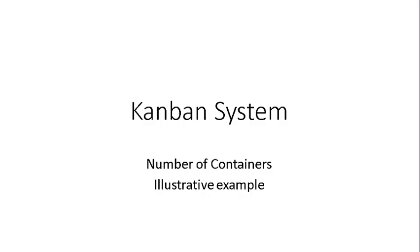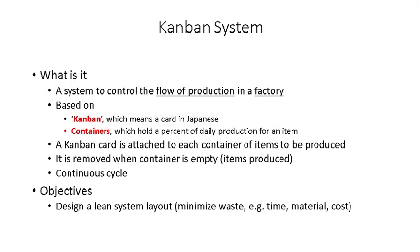Hello and welcome to this video. I am going to present a brief introduction to the basic notions of the Kanban system and present an illustrative example on how to calculate the number of containers required for a simple production system. The Kanban system is based on the concept of 'Kanban,' which means 'card' in Japanese, and the concept of containers, which are placeholders holding a percentage of the daily production of one single item. It is basically a system to control the flow of production in a factory.